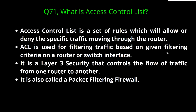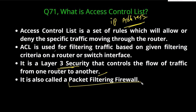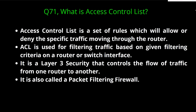ACL is a Layer 3 security. We call it Layer 3 security because ACL works on the basis of IP address — it filters traffic on the basis of Layer 3 information, which is the IP address. Access control list always uses IP address to filter traffic, and it controls the flow of traffic from one router to another. It is also called a packet filtering firewall.